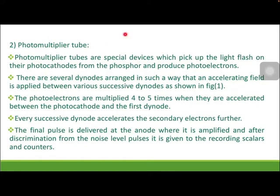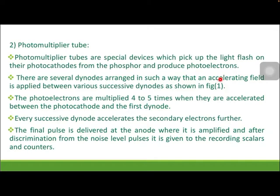The second part is the photomultiplier tube. Photomultiplier tubes are special devices which pick up the light flash on their photocathodes from the phosphor and produce photoelectrons. This is based on the photoelectric effect, a phenomenon first described and investigated by Albert Einstein, for which he received a Nobel Prize in 1905. The photomultiplier tube's action is based on the photoelectric effect — the light flashes produced by the phosphor material are caught by the photocathodes.